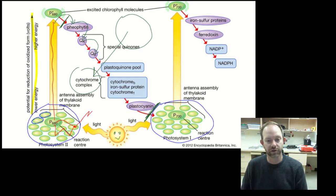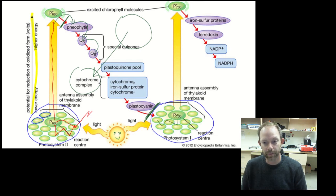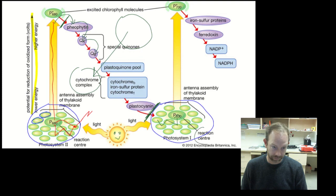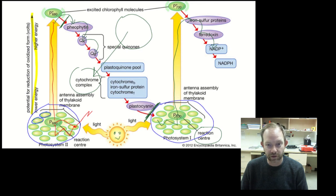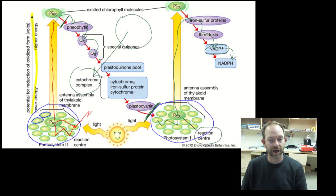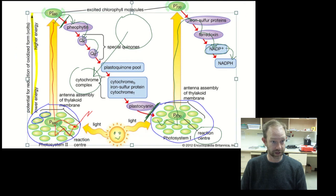Eventually those same two electrons arrive at the second photosystem. The same thing happens: a photon of light strikes one of the pigments, the electrons bounce around until they reach the reaction center, and they're passed off to a second electron transport chain. This second chain doesn't pump hydrogen ions; instead it sends the electrons to an enzyme that reduces the electron carrier NADP+ to NADPH.